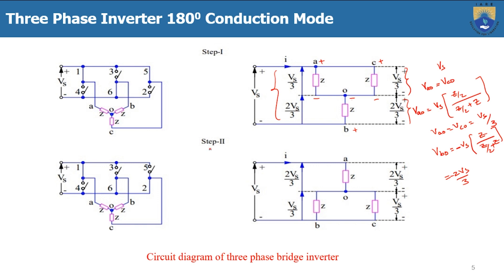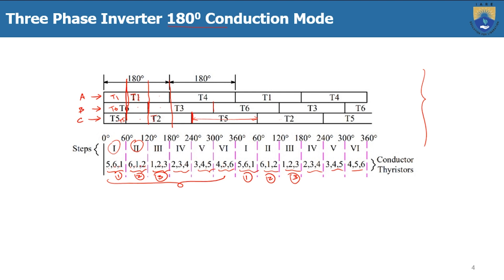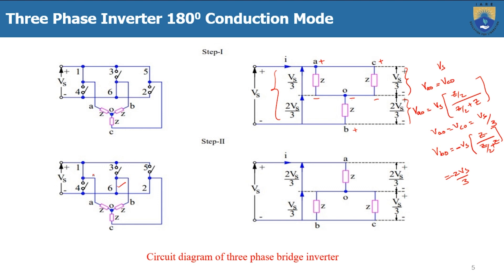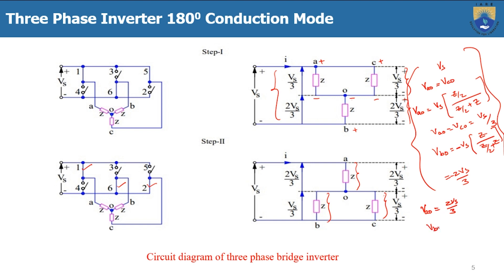In Step 2, switches 6, 1, and 2 are conducting. T1 is from the positive group (phase A), while T6 (phase B) and T2 (phase C) are from the negative group. Applying the same voltage division principle: VAO = 2VS/3, and VBO = VCO = -VS/3.